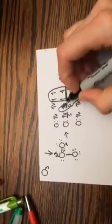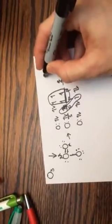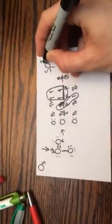So this becomes s, p1, p2. sp2 hybridization.